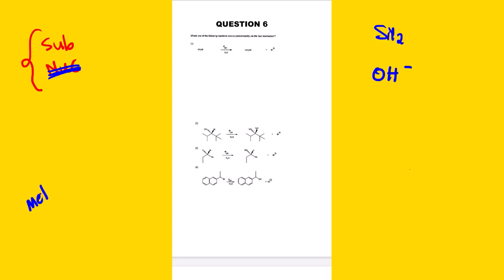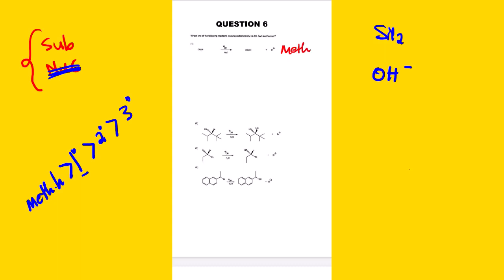The reactivity trend for SN2 substrates is: methyl halide reacts fastest, followed by primary alkyl halide, then secondary alkyl halide, and lastly tertiary alkyl halide — which we agreed during class is almost impossible for SN2. Looking at the first option, we can see it is a methyl halide, so we can already conclude that option one is our correct answer.